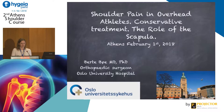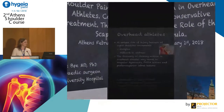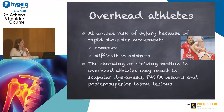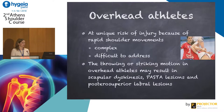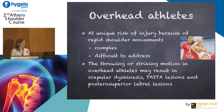My topic is the conservative treatment of shoulder pain in overhead athletes and the role of the scapula. These athletes are at a unique risk of injury because of their rapid shoulder movements. The injuries are often complex and therefore difficult to address. The throwing or striking motion in the overhead athlete might result in scapular dyskinesis, pasta lesions, and often posterior superior labral lesions.